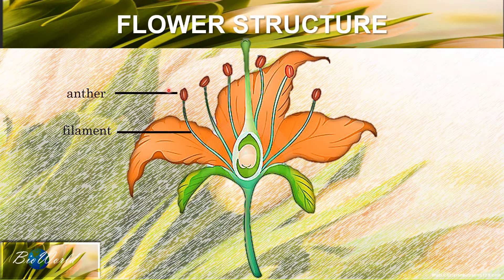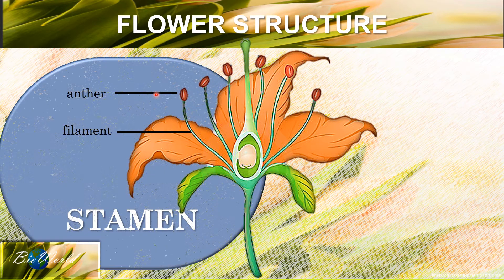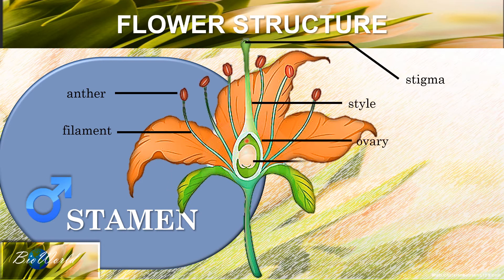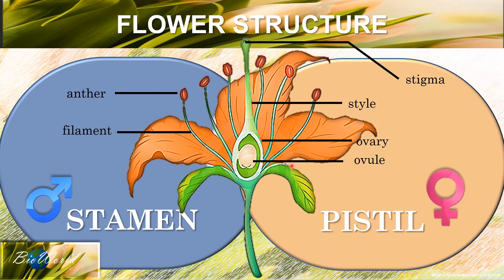The anther and the filament are both the male reproductive structures known as the stamen, while the stigma, the style, the ovary and the ovule are the female reproductive structures known as the pistil. However, self-fertilization will not occur because the development of the male gametes and the development of the female gametes do not occur at the same time.